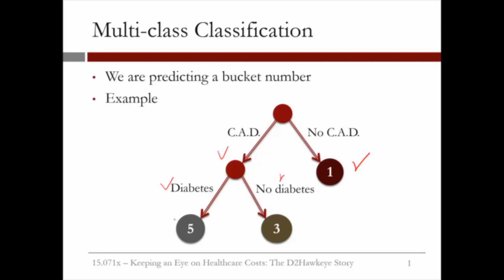If the patient has diabetes, then it's bucket five — very high risk. And if it doesn't have diabetes, but given that it has coronary artery disease, it is classified as bucket three. This is an example with only two diagnoses to illustrate how the method works.